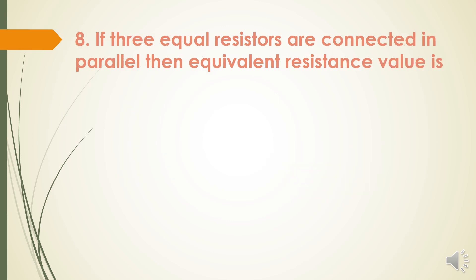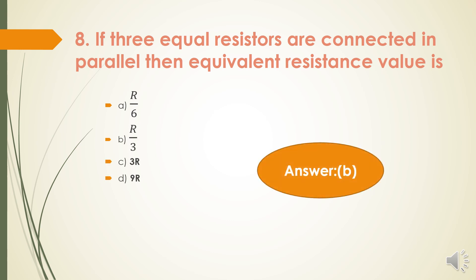Next question: If three equal resistors are connected in parallel, then the equivalent resistance value is R/3. So, if two equal resistors in parallel give R/2, then three equal resistors in parallel give R/3. The answer is option B.